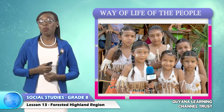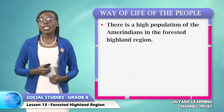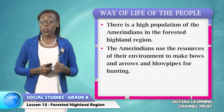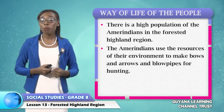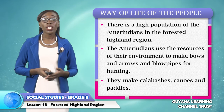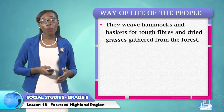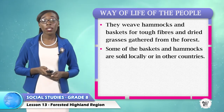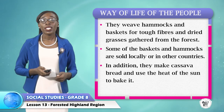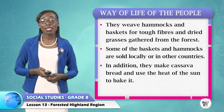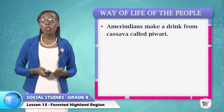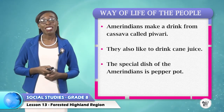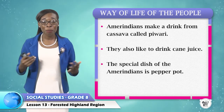Now let's look at the way of life of the people in the forested Highland region. There is a high population of Amerindians in the forested Highland region. The Amerindians use the resources of their environment to make bows and arrows and blow pipes for hunting. They make calabashes, canoes, and paddles. They weave hammocks and baskets from tough fibers and dried grasses from the forest. Some of the baskets and hammocks are sold locally or in other countries. In addition, they make cassava bread and use the heat of the sun to bake it. Amerindians make a drink from cassava called paiwari. The special dish of the Amerindians, as you know, is pepper pot.